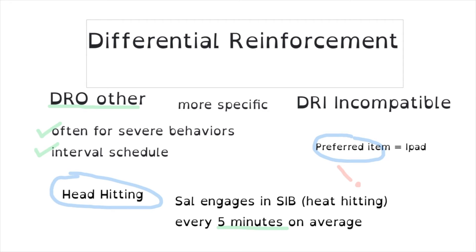This behavior is so severe that we're matching the most preferred item with the absence of the head hitting. There might be other interventions in place for elopement, throwing chairs, or hitting others — other reinforcement schedules could address those. But the DRO schedule is focusing on this one severe behavior.